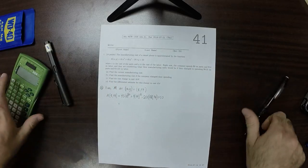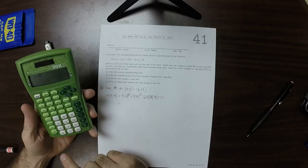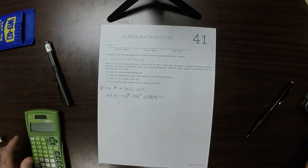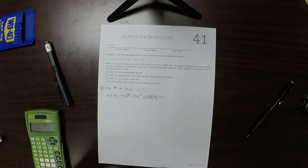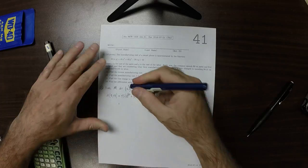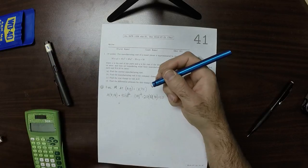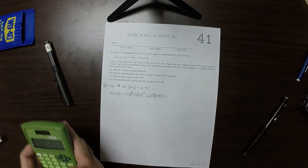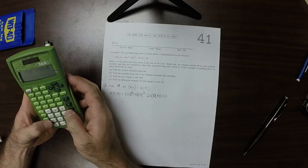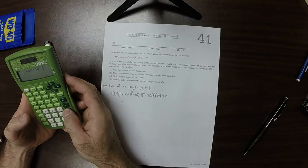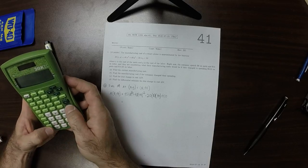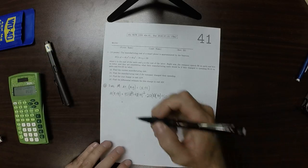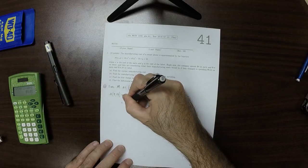So plugging that into the machine here, 45 times 8 squared plus 40. This should say 40 here, plus 40 multiplied by 14 squared minus 20 times 8 times 14 plus 50. Okay, so that's 8530.